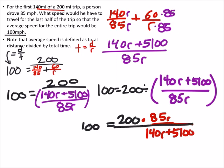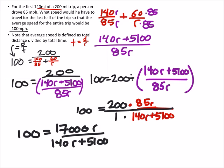So this is what we have after the reciprocation. If we wanted to, we could make this one big fraction and make that 200 over 1 so that we can multiply the numerators and denominators respectively. So that gives us 100 equals 17,000R over 140R plus 5100. And if we make that 100 over 1, we can cross multiply these. So now I'm going to go ahead and multiply 17,000R by 1 which would give me 17,000R. And if I cross multiply these, that's equivalent to 100 times 140R plus 5100.